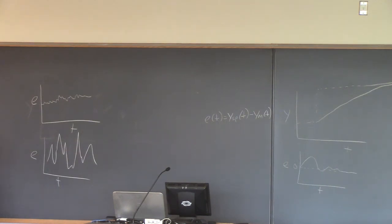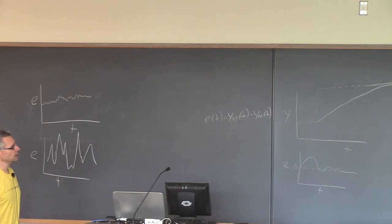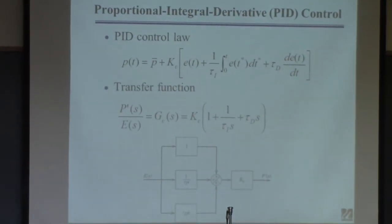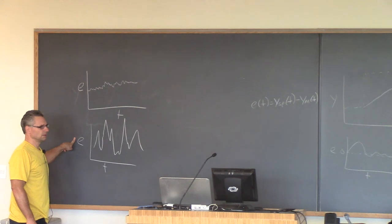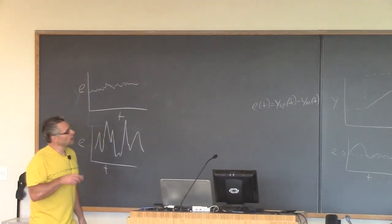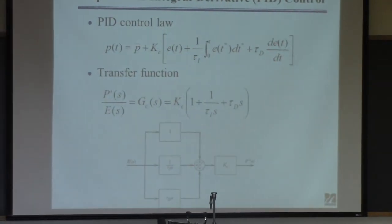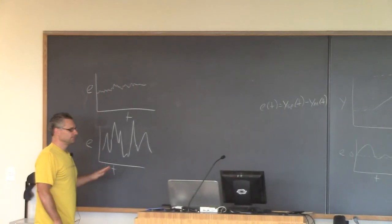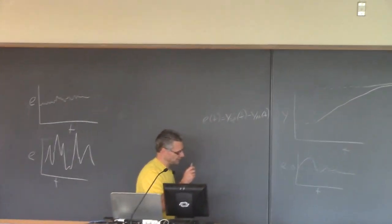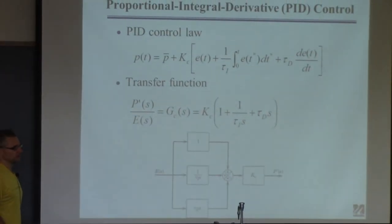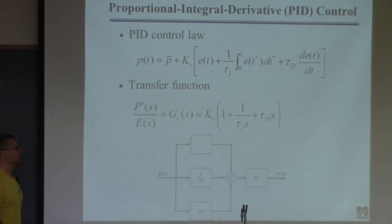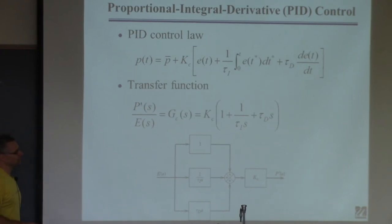My experience is that the benefits of derivative control are usually outweighed by the negative aspects. While it does give you anticipatory capability, unless your signal is really clean, derivative control tends to make controller behavior worse. Engineers usually end up setting τD very small to avoid weighting the noise. In my experience, you can almost always do without derivative control. The critical parts are P and I.